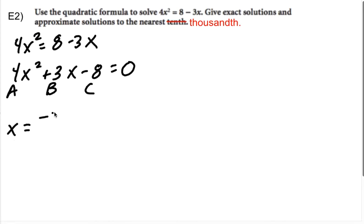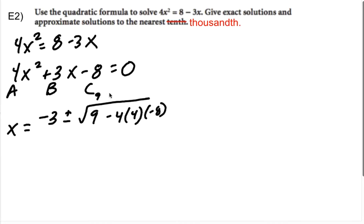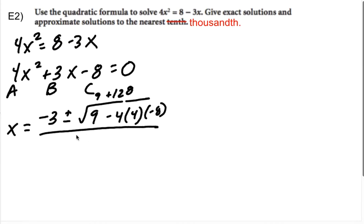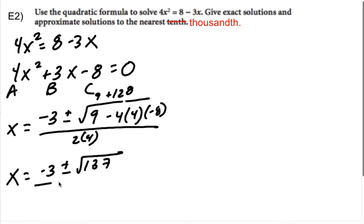So x equals negative b — which is negative 3 — plus or minus the square root of b² = 9, minus 4 times 4 times -8. Wait — 4 times 4 is 16, times 8 is 128. And it's positive because those are both negatives. All over 2 times 4 = 8. Inside the root: 9 + 128 = 137. So x = (-3 ± √137) / 8.